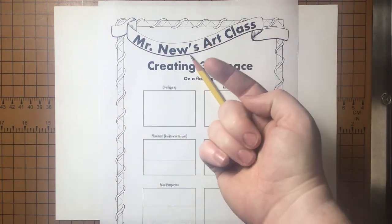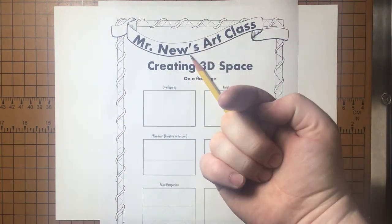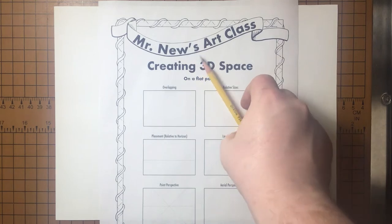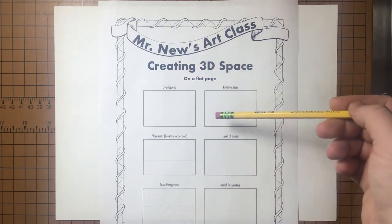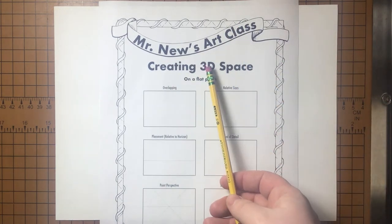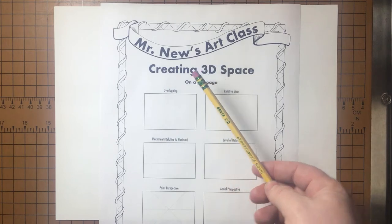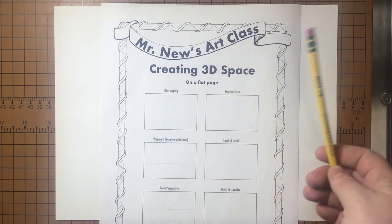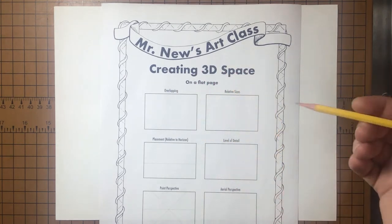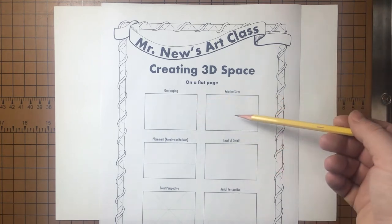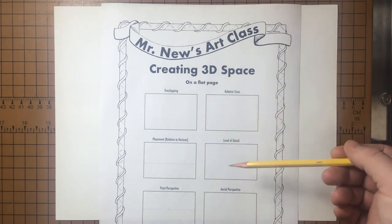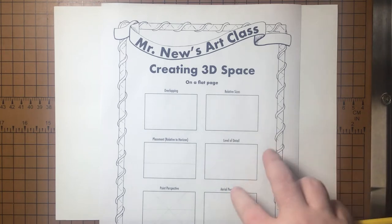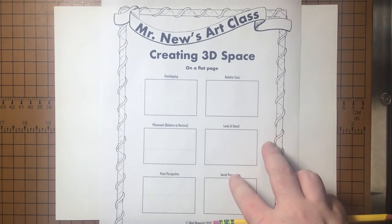Welcome back to Mr. News Art Class. It's wonderful to see your smiling faces. Today we're going to talk about six different ways that we can create a 3D space on a flat page. We're creating an illusion like we're magicians or something. We'll start with the simple stuff and work our way towards the more complex ideas, but all of this should be pretty easy to understand for today.